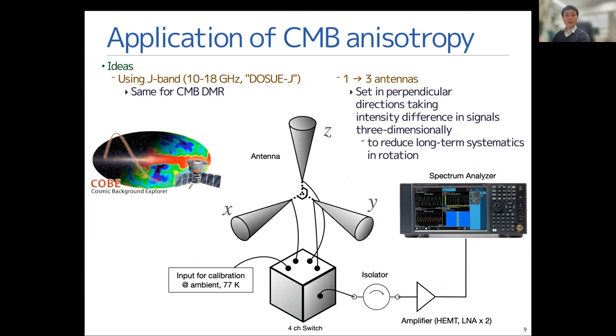To achieve this measurement, we apply the technique of the cosmic microwave anisotropy measurement by COBE. For example, if we set two antennas and take the difference of the power of signal between them, we can measure the directional information of the wave.